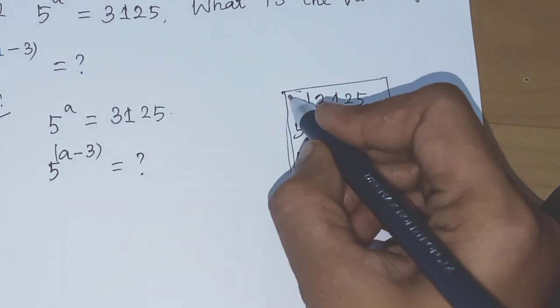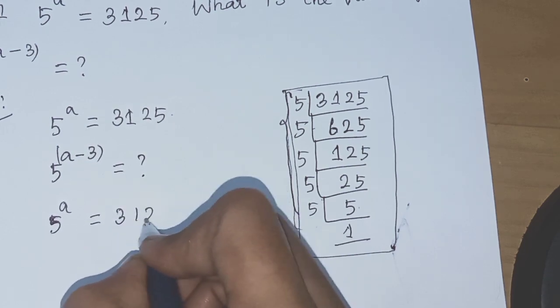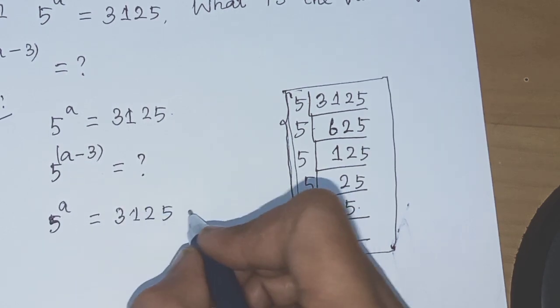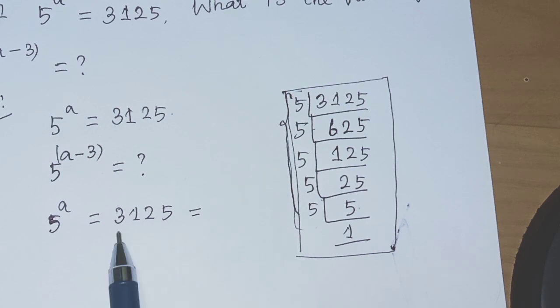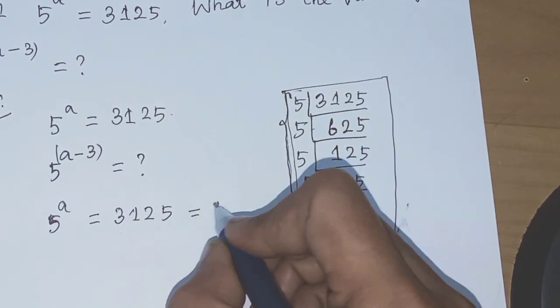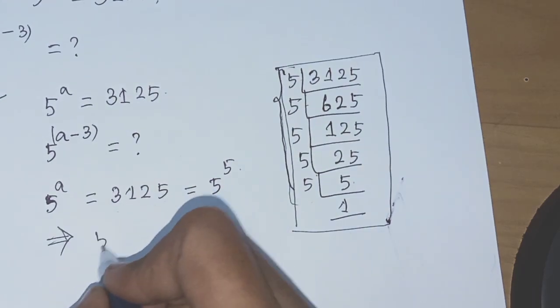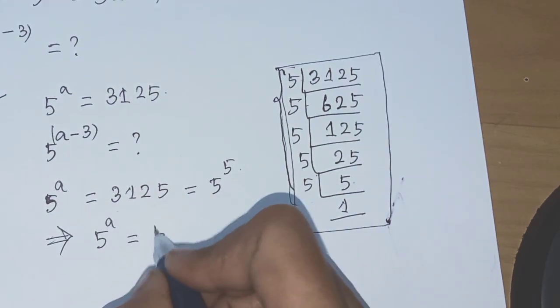So 5 power A equal to 3125 equals 5 to the power of 5. This implies 5 power A equals 5 power 5.